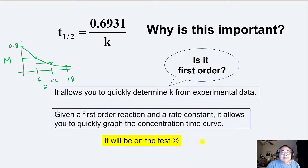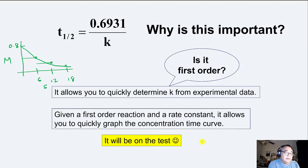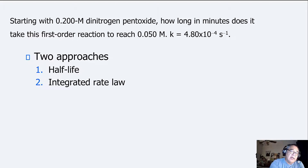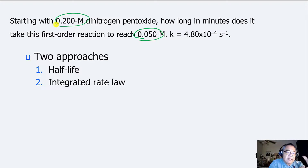This kind of stuff comes up on tests all the time, and there are many ways to do these problems — this is the fastest way. For example: starting with 0.200 molar dinitrogen pentoxide, how long does it take this first-order reaction to reach 0.050 molar? K is 4.8 × 10⁻⁴ per second. You recognize that going from 0.2 to 0.1 is one half-life, and from 0.1 to 0.05 is the second half-life — so this is exactly two half-lives.